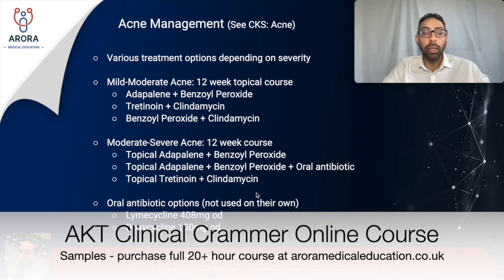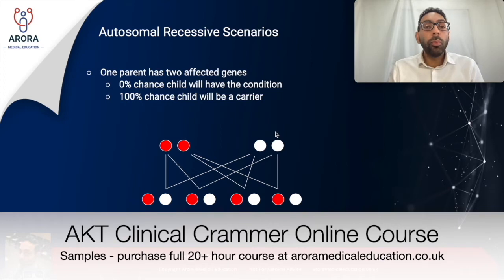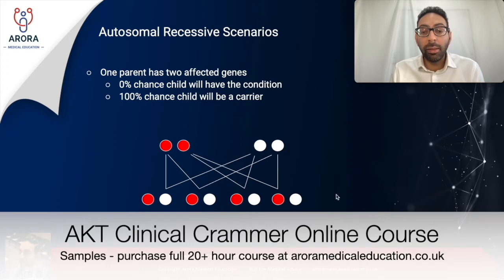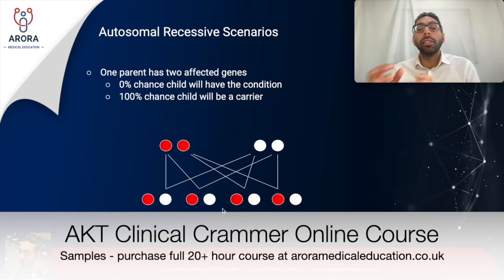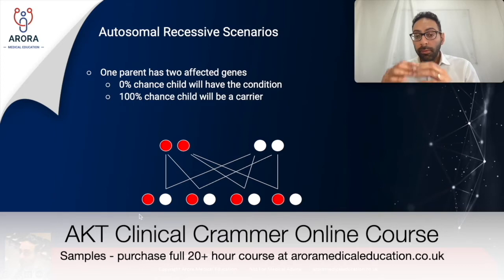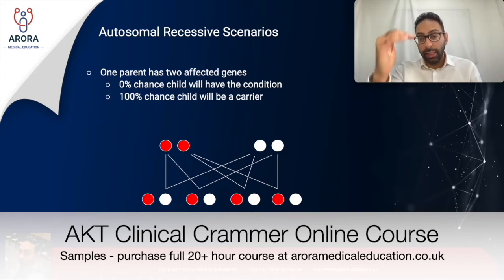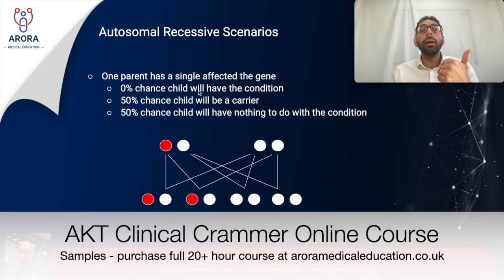In an autosomal recessive scenario where one parent has two affected genes — meaning that parent actually has the condition — there is a zero percent chance the child will have the condition and a 100% chance the child will be a carrier. This is because the other parent has no affected genes, so the child must get at least one unaffected gene, and autosomal recessive requires two affected genes for the condition. Being a carrier is important for their future offspring.